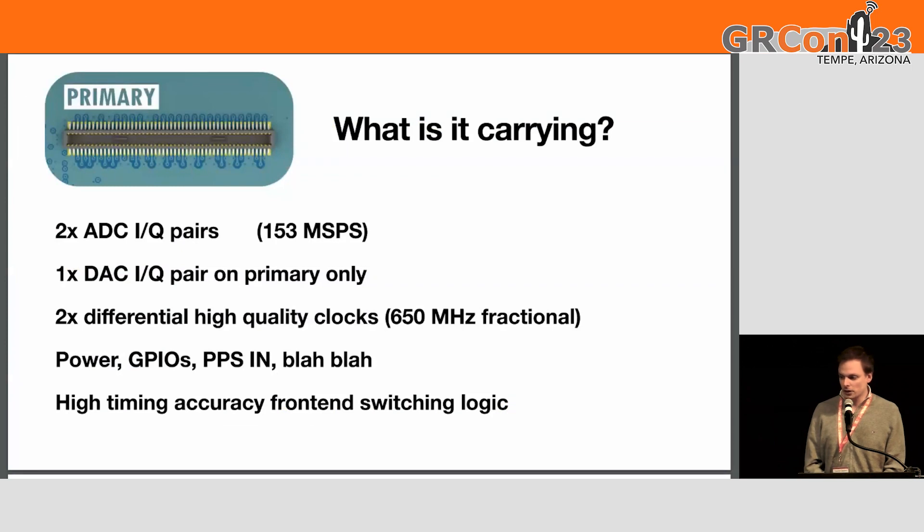What are they carrying? They're carrying two ADC pairs, IQ pairs, 158 mega samples per second, one DAC. So that's a total of, it seems like we have two interfaces, and of course, two IQ pairs per pair. That's like eight ADCs. So if you want to have the sample rate, you can have an eight-channel coherent receiver for like 299.